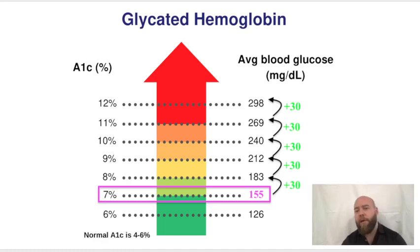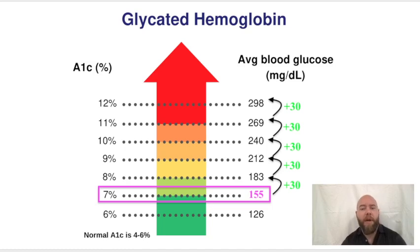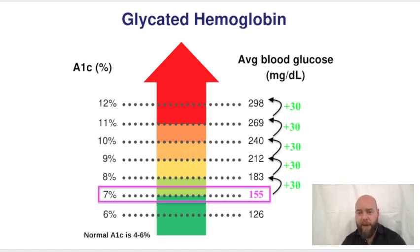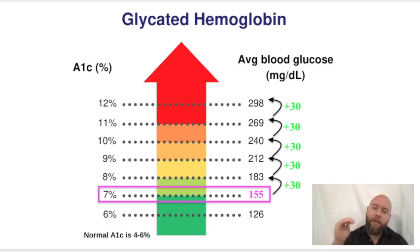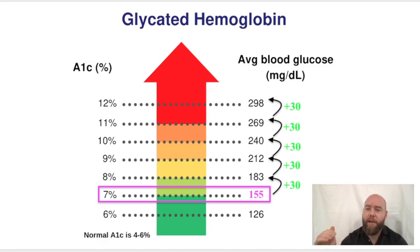Each A1c correlates with an average blood glucose. All you have to do is memorize that an A1c of 7 is a blood glucose of 155. After that, for every one level of A1c you go up above 7, you add 30 to the blood glucose.